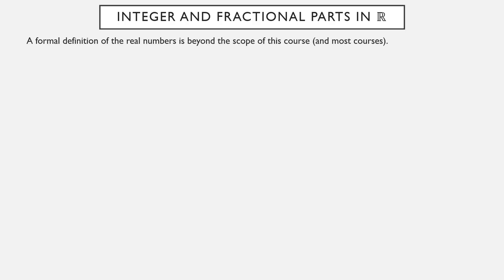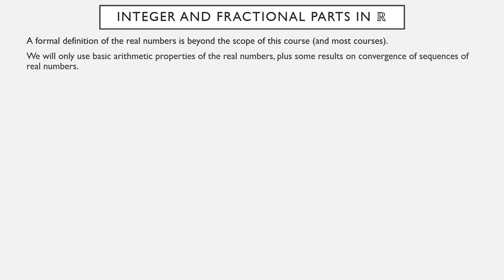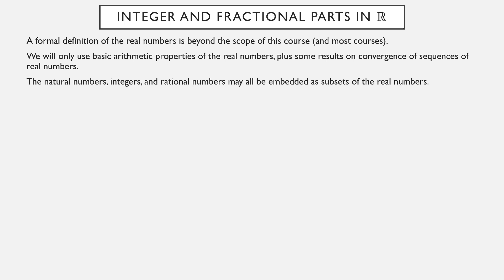A formal definition of what real numbers are is way beyond what I want to get into. In fact, a solid majority of undergraduate math majors never actually formally define what the real numbers are. We're only going to use basic arithmetic properties — how do you add numbers, what number is bigger than another — plus some results on convergence of sequences and series of real numbers. The natural numbers, integers, and rational numbers can all be embedded as subsets of the real numbers.